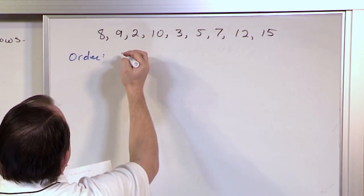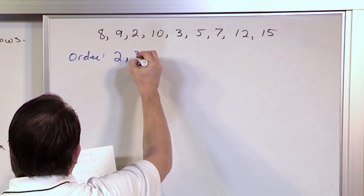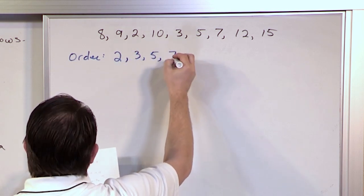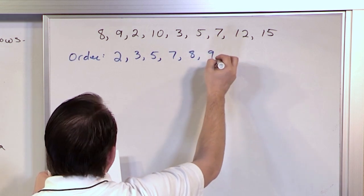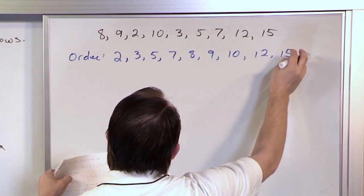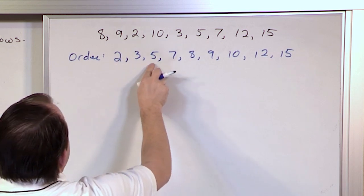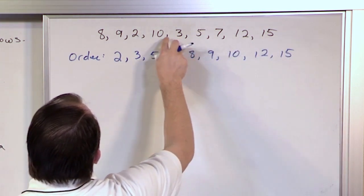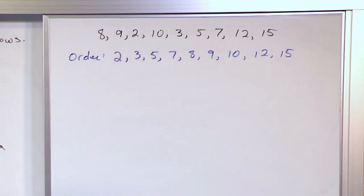The lowest thing we have is 2, so we want to go from there: 2, 3, 5, 7, 8, 9, 10, 12, and 15. And I think you would agree this is everything — we have 9 values and everything is put into order.